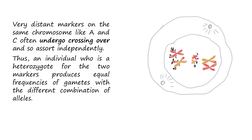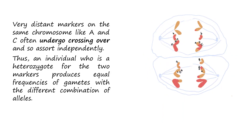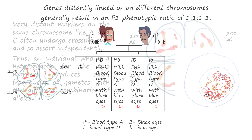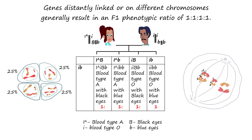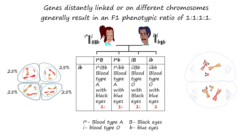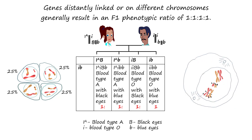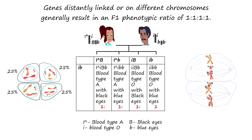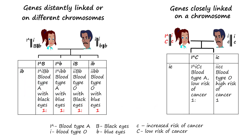Thus, an individual who is heterozygous for the two markers produces equal frequencies of gametes with different combinations of alleles. And in a mating between a heterozygous individual for two genes and a homozygous recessive, whether the genes are distantly linked or on different chromosomes, the F1 phenotypic ratio of 1:1:1:1 generally results, which is different from the F1 phenotypic ratio for the same cross in linked genes.